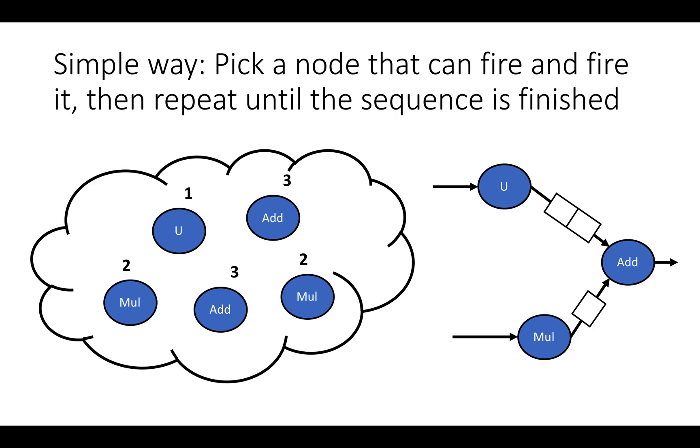As a start, we could start by firing our upsample node. When we fire the upsample, it's got no dependencies inside the data flow graph, so we can just fire it and put two tokens inside this buffer going to the adder. Now the adder can't fire yet because it doesn't have enough data in its buffer. It needs one piece of data from the multiplier, but the multiplier has no dependencies, so we can fire it.